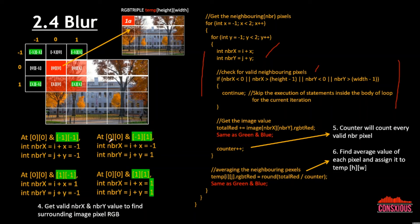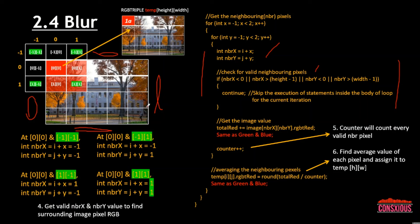We check whether each position in the 3×3 box is within the image bounds. If outside the image, x or y will be negative or exceed the height or width. We use if statements to check for valid coordinates — if the position is outside the box we call continue to skip that iteration.